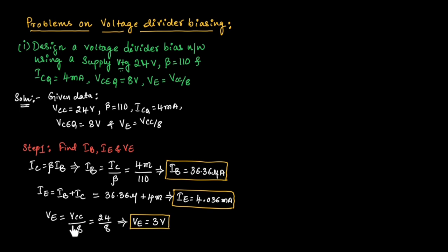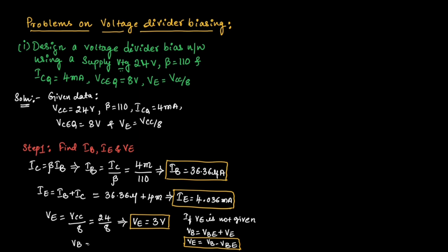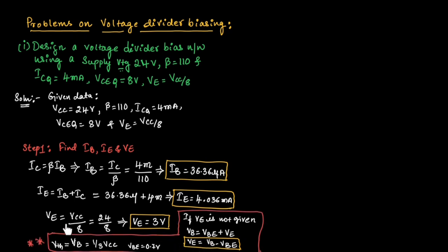In some problems, the value of VE is not given. In that case, we use the formula VB = VBE + VE, so VE = VB − VBE. We can find VB using VB = (1/3) × VCC, since VB is nothing but the Thevenin's equivalent voltage. We know VBE = 0.7 volts. Once we find these two values, we can find VE. Use this formula if VE is not given.